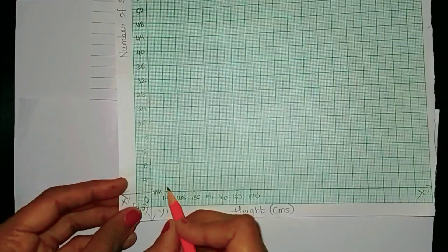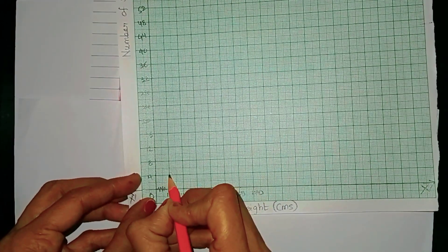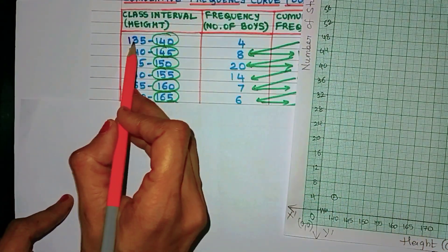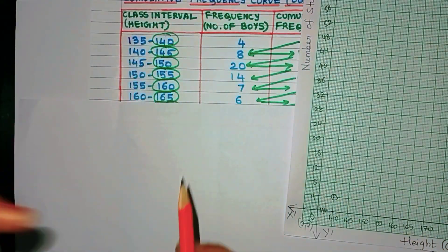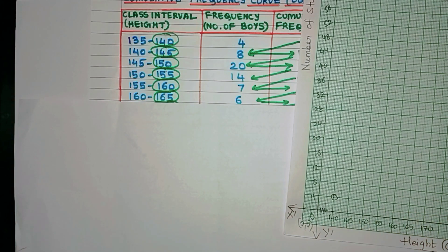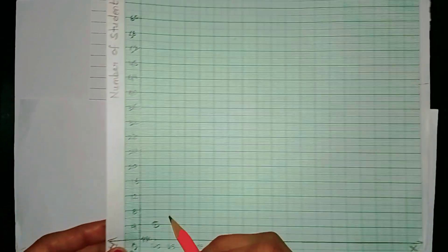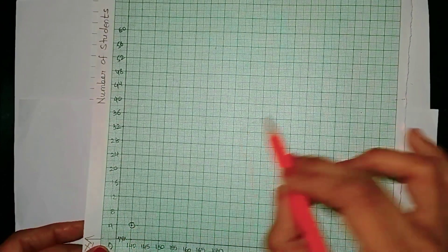Now the first upper limit is 140 and it is to be paired with 4. So here I have 140 and it is to be paired with 4. Now some books also pair the lower limit of the first class interval with 0. That is also absolutely fine; both methods will give you the same answer.